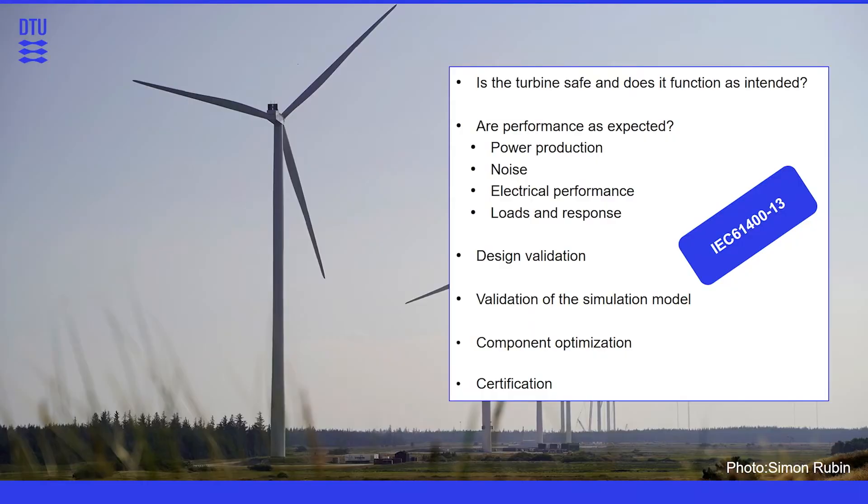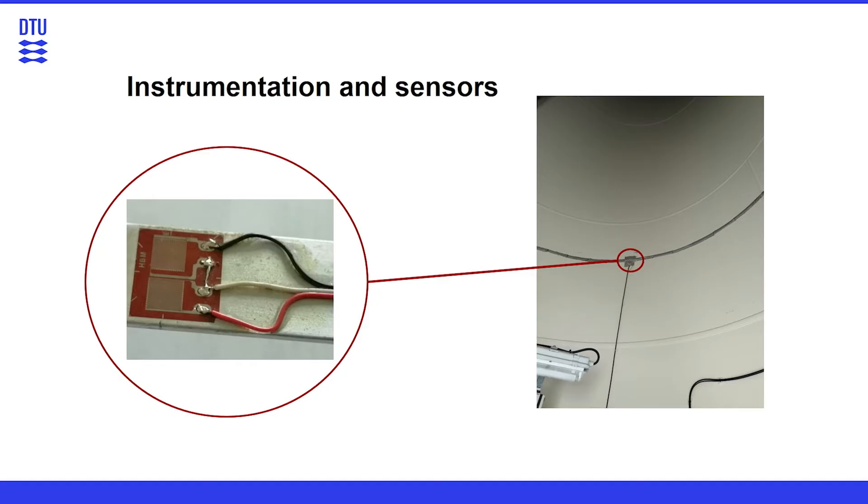And the international standard IEC 61400-13 is a very important standard for the load measurements. The way loads are measured on a turbine are various. There are many different sensors. A typical sensor for measuring loads is a strain gauge. We see one here in a close-up picture, and here we see it installed inside a tower of a turbine.